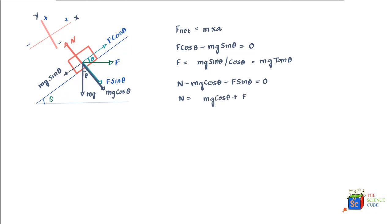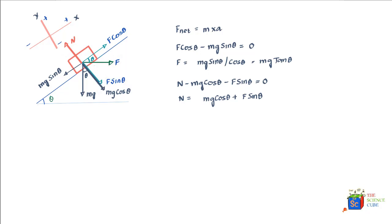Therefore, the normal reaction equals mg cos theta plus F sin theta. The normal reaction is enhanced due to force F, which provides an additional component F sin theta in the downward direction. That is why the plane pushes the mass upward with mg cos theta — which would be there due to the weight of the box — plus an additional force F sin theta on account of the applied force F.